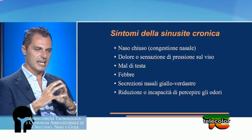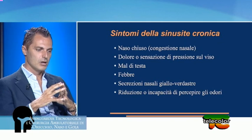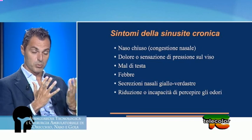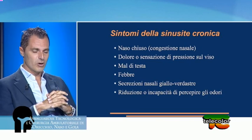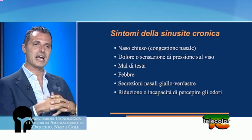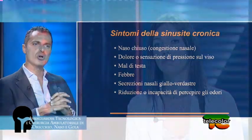Se il muco ristagna a livello dei seni paranasali, possiamo osservare le nevralgie, sintomi caratteristici della sinusite cronica. Si parla di nevralgia del nervo trigemino, un nervo famosissimo per i suoi sintomi molto invalidanti, con tre branche: oftalmica, mascellare e mandibolare. Una sensazione di dolore o di pesantezza spontanea o alla pressione del massiccio facciale è il sintomo più classico della sinusite cronica.